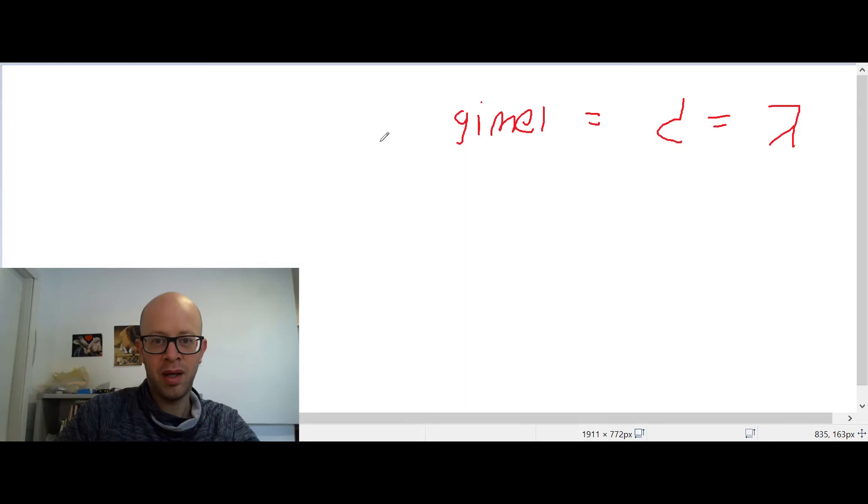Now when you want to do the J, it's almost the same thing, but you add like an apostrophe. So it's like that and like that. So this is how I would write it. It's Gimel.